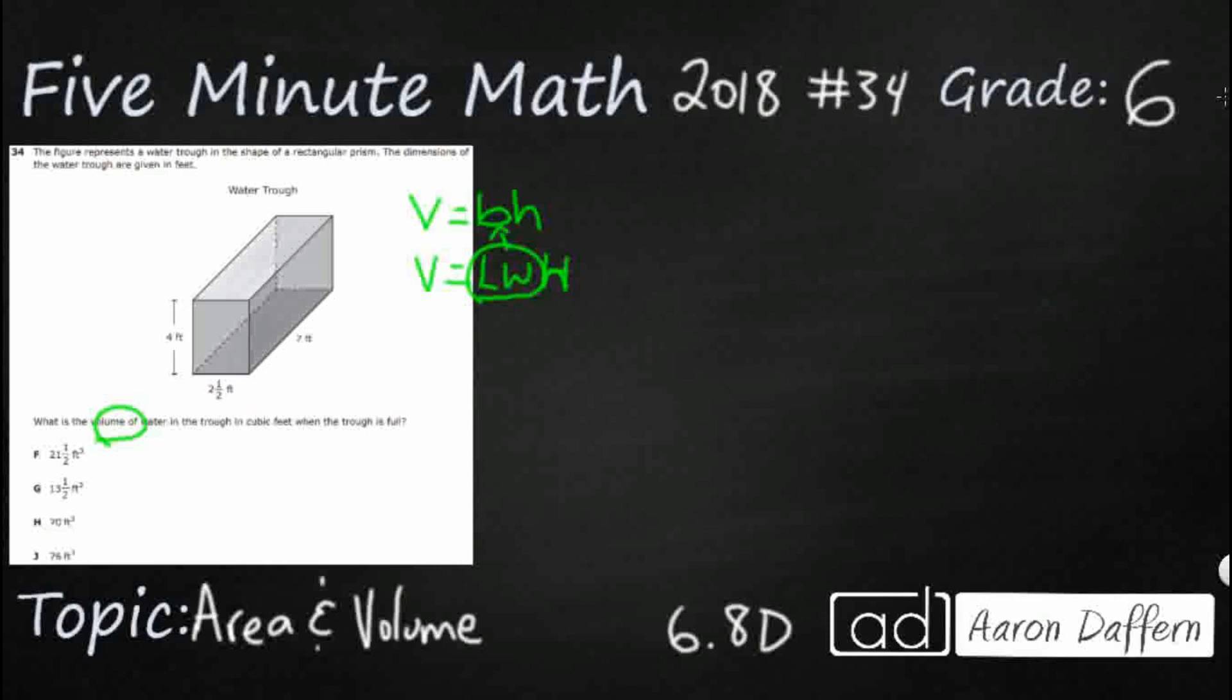So let's take a look at what we have here. We've got a rectangular base. I'm going to outline it right there in green. We can find the area of the base by multiplying length times width. So we've got 7 times 2 and a half. That's going to be the only tricky part. There's a few different ways we could multiply 7 times 2 and a half.